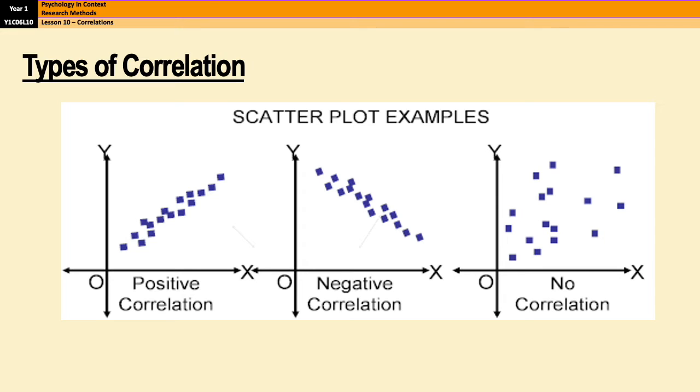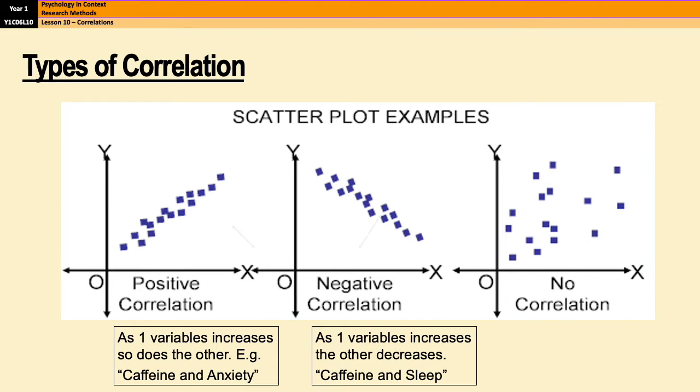So like I said before, you have two types of correlation. You've got positive correlations and you have negative correlations. You've also got no correlation, but that's not really a type of correlation. Your positive correlation, you can see on the left hand side there, that essentially is as one variable increases, so does the other. For example, caffeine and anxiety: as the amount of caffeine that you drink increases, so does the level of anxiety that you experience. You've also got a negative correlation, which means that as one variable increases, the other one decreases. So the example there would be that as the amount of caffeine that you drink increases, the amount that you sleep decreases. And then obviously no correlation means there's no relationship at all.